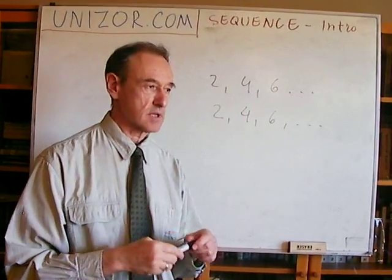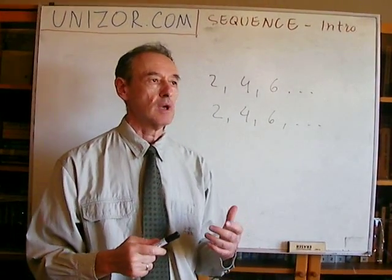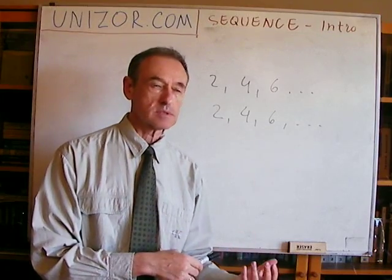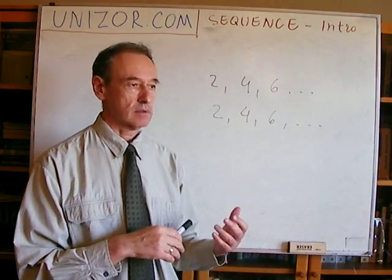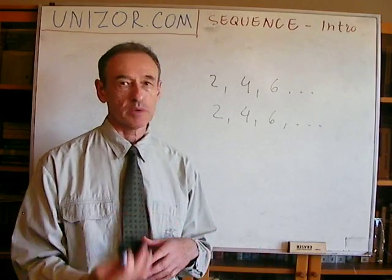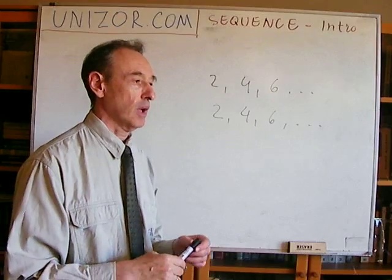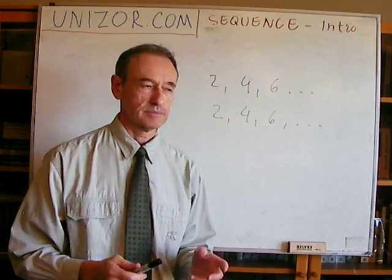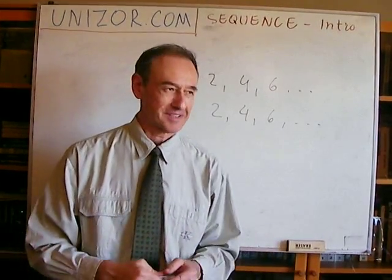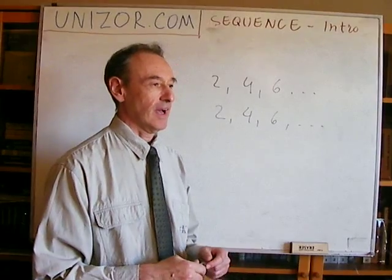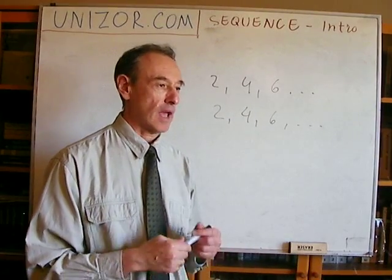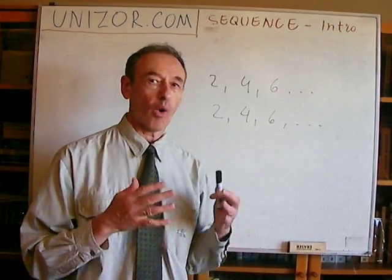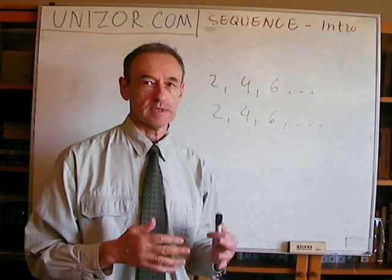So what's the difference, and why do we use the term 'set' in one case and the term 'sequence' in another case? Well, the answer is very simple. The answer is that a sequence is basically an ordered set.